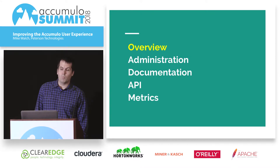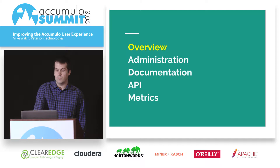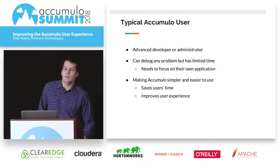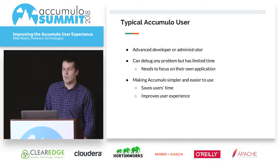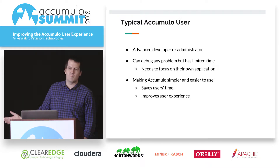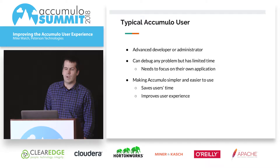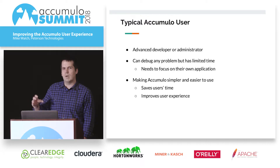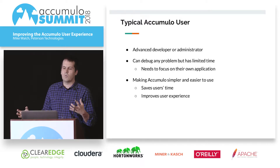I'm going to give an overview about why we want to improve the user experience and talk about different aspects of Accumulo where we've improved it. So who is the typical Accumulo user? I'd have to say they're typically advanced developers and administrators — skilled enough that they could easily contribute to Accumulo if they wanted to, even become committers with enough contributions. So improving the experience isn't about dumbing down Accumulo; it's more about saving our users time.